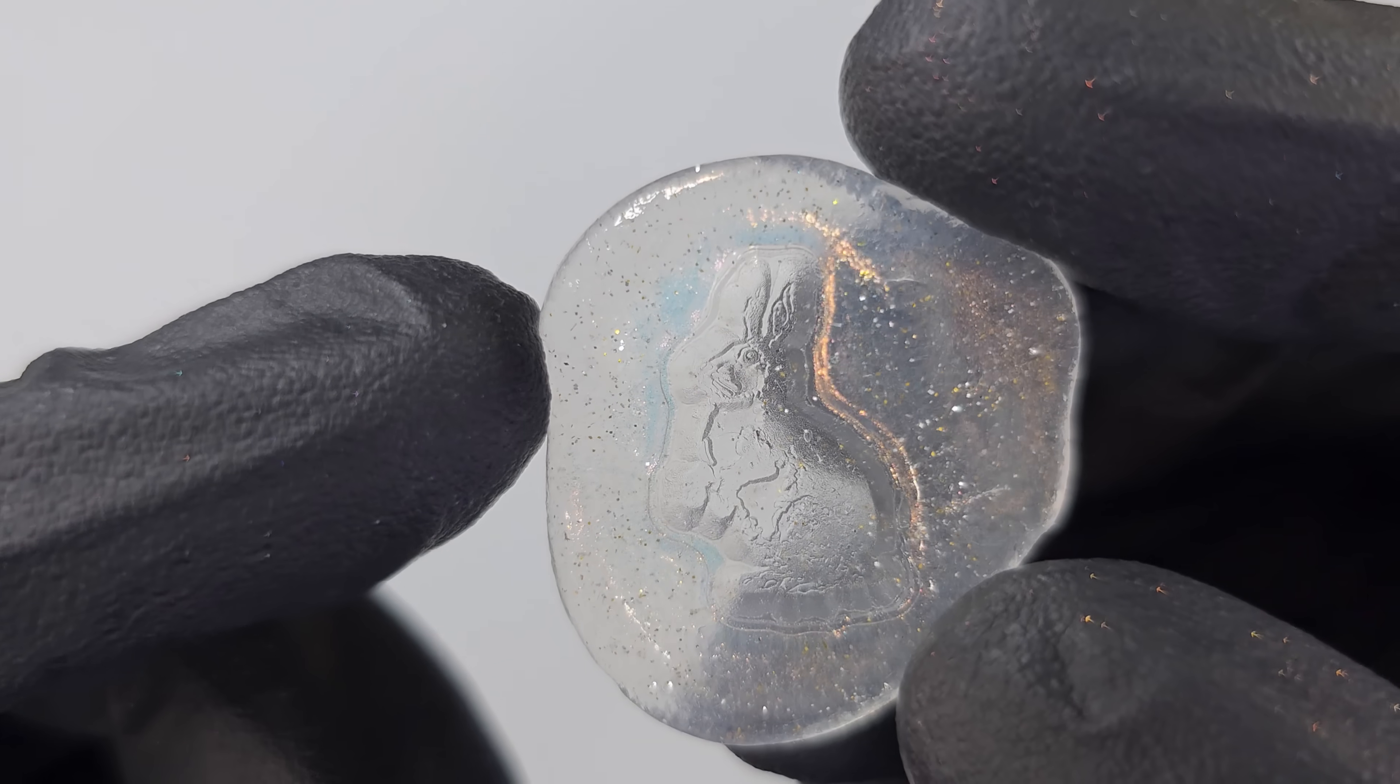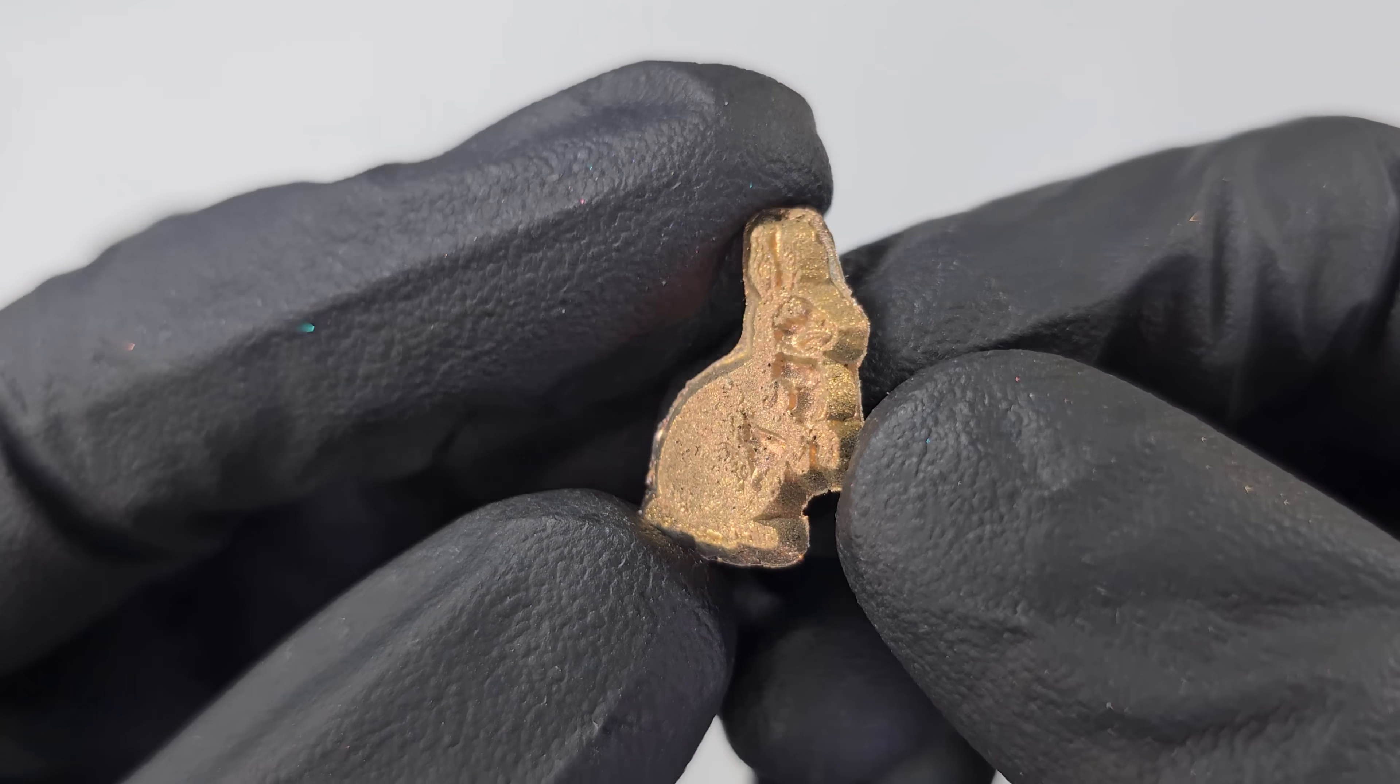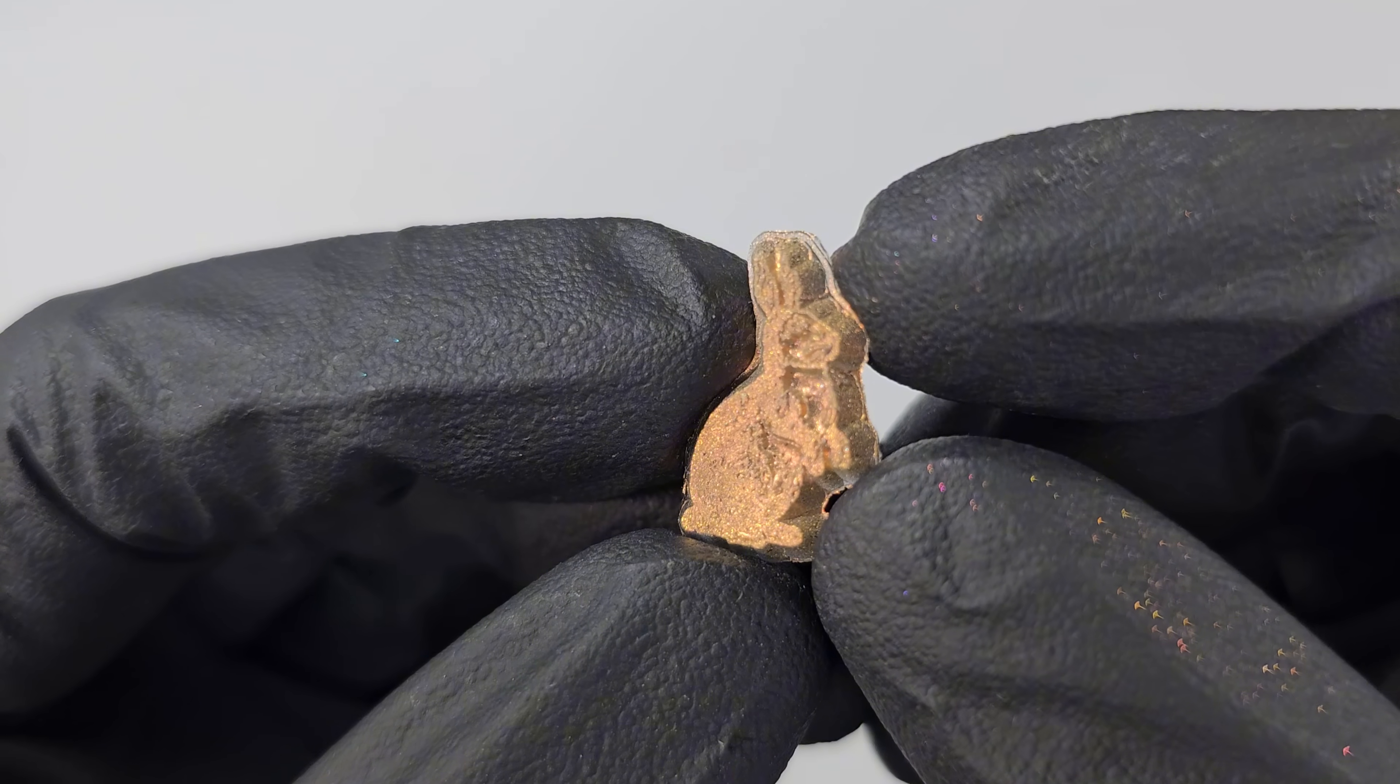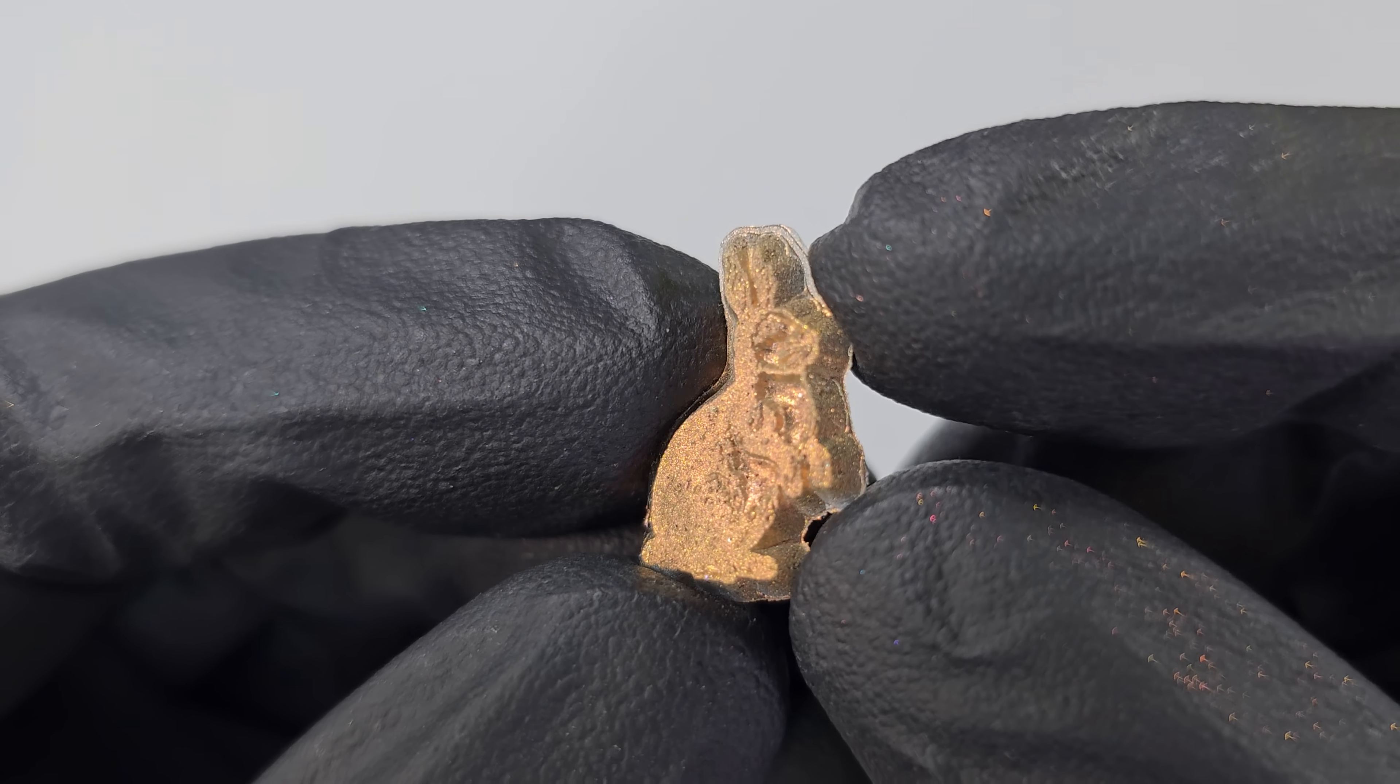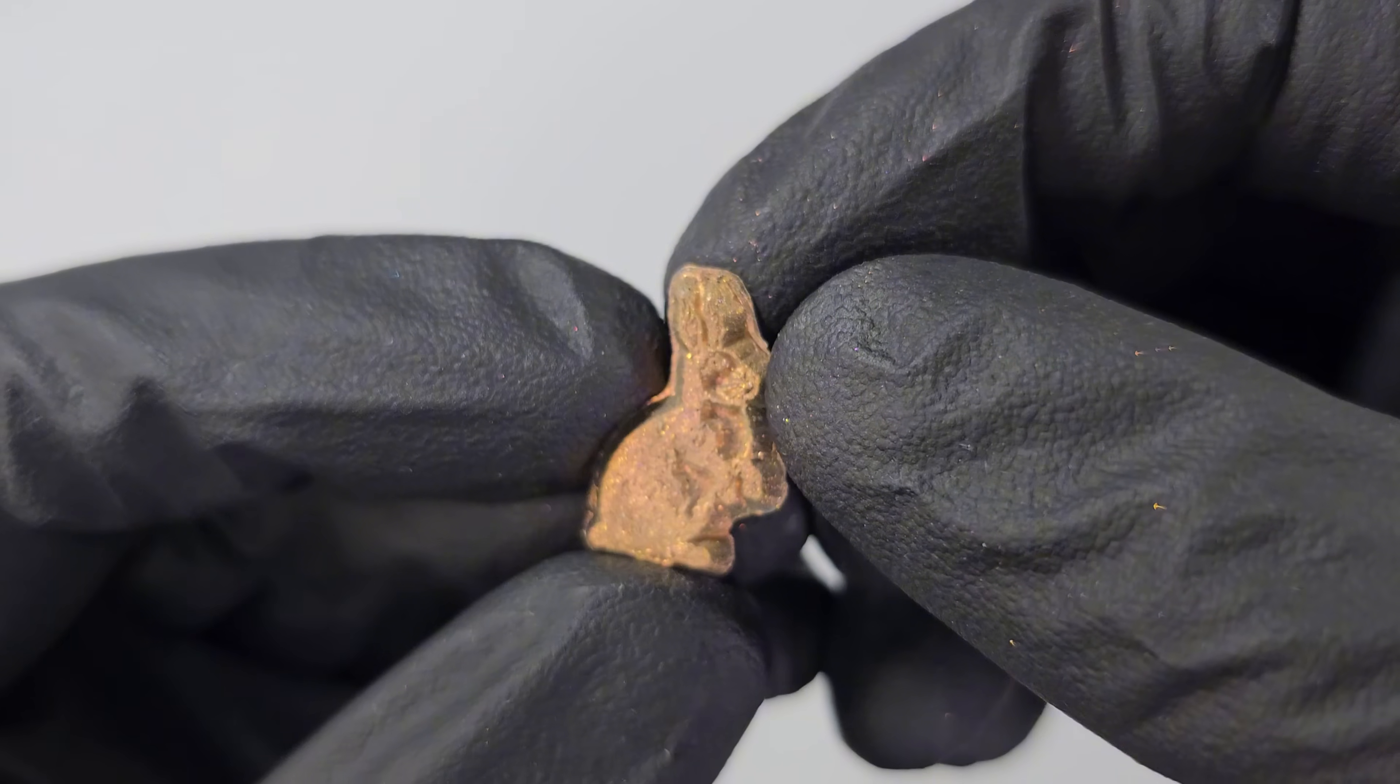So the mold still looks the same. Have we just made almost an instant charm? We have. It's got the detail. Okay, the gold's very overpowering, but it gives you an example of what you could do with it. And you could then put that into another piece of resin, I suppose. The gold has taken away some of the detail, but it's pretty incredible.